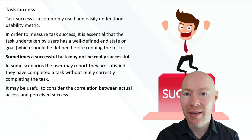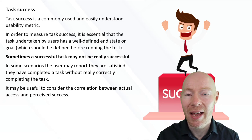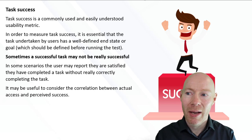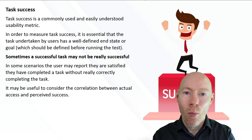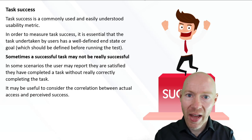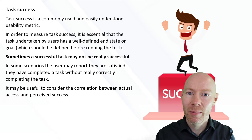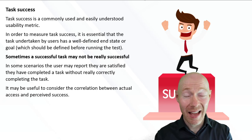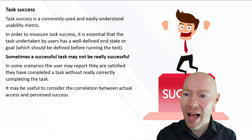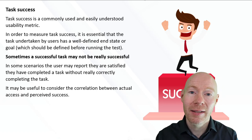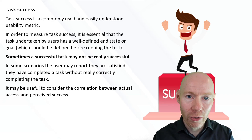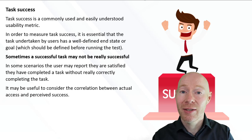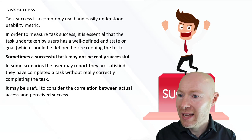One of the most important things when thinking about using task success as a metric is to make sure that we define tasks that have a well-defined, quantifiable, measurable, identifiable end state. We know when that task has been completed, and we should define what task completion looks like before we run the experiment.